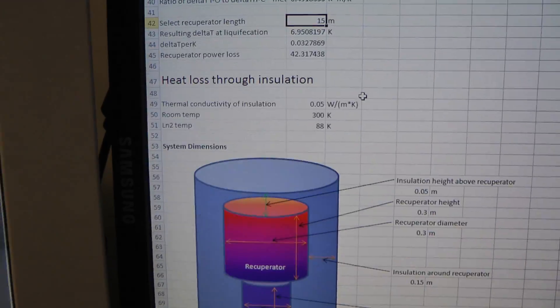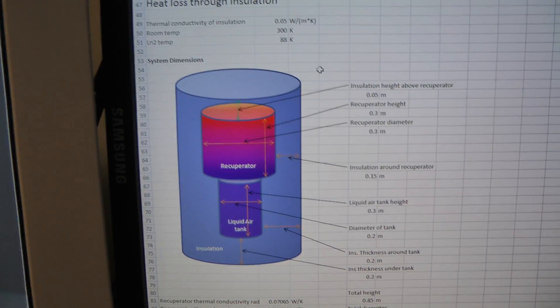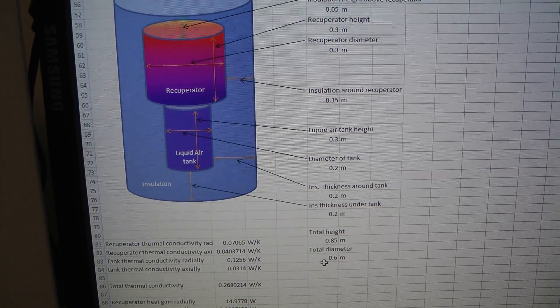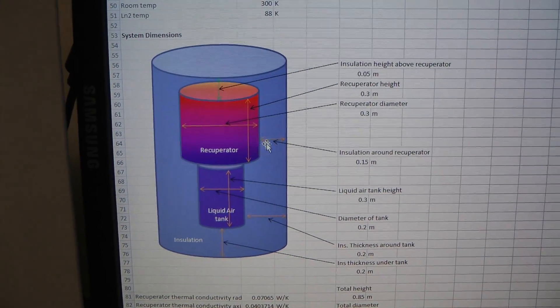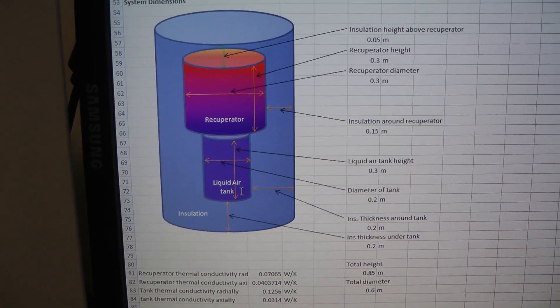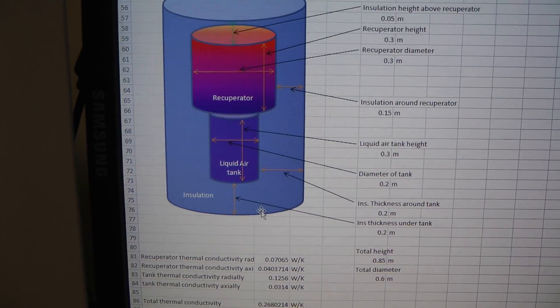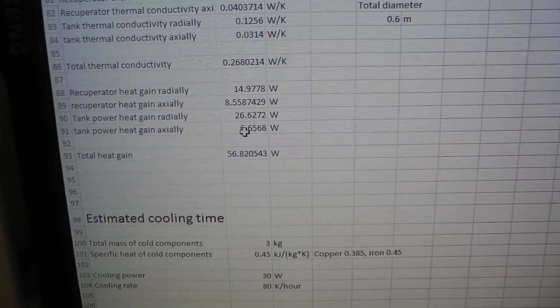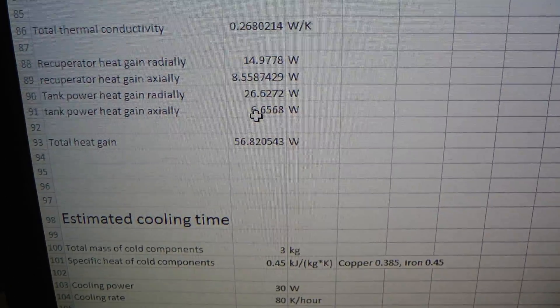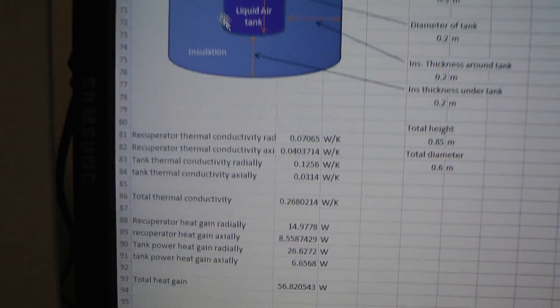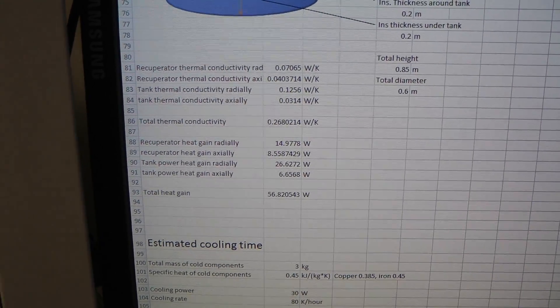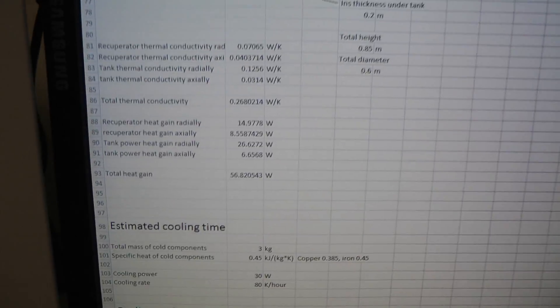I've also looked at the heat loss through the insulation. I just picked some values for the sizes, the thicknesses of insulation, diameters of components, and made some assumptions about the heat flow. We end up getting about 55-56 watts loss through all the insulation, assuming the calculations are right. These are probably a little bit optimistic, but it's not too far off.